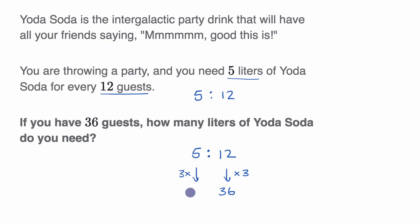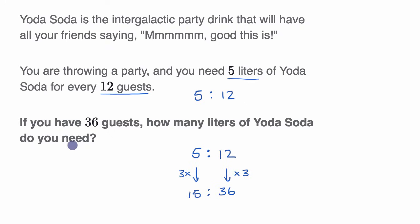Three times five is 15. So five liters for every 12 guests is the same thing as 15 liters for every 36 guests. To answer that question: how many liters do you need? You need 15 liters.